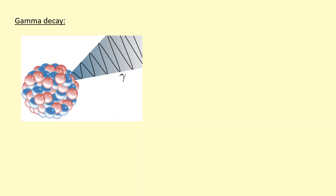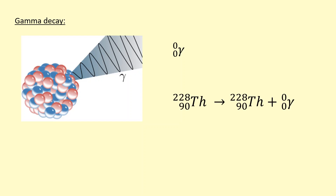Finally, we have gamma decay, which happens after alpha or beta decay when the nucleus has a bit too much energy and emits a gamma wave. A gamma wave is a very high-frequency electromagnetic wave, so it has no mass or charge — its symbol is just zero over zero. It doesn't actually change the nucleus — the number of protons and neutrons stays the same. In this example, thorium was in an excited nuclear state. Just like electrons have energy levels, the nucleus has energy levels too, and when it has too much energy it emits that energy as a gamma photon. We can calculate the energy of the gamma photon using E = hf.